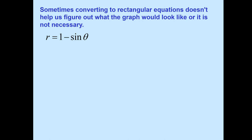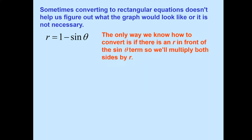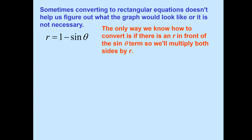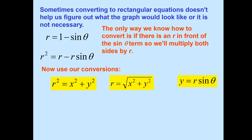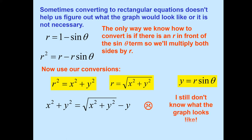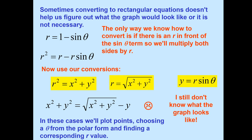Sometimes converting to a rectangular equation doesn't help us figure out what kind of graph we're looking at. For example, r equals 1 minus sine theta — if you try to convert it, you multiply by r for each term, getting r squared equals r minus r sine theta. Converting back to rectangular gives x squared plus y squared equals the square root of x squared plus y squared, minus y. It's very difficult to tell what that graph looks like. So instead, we're going to plot points and use tests of symmetry.